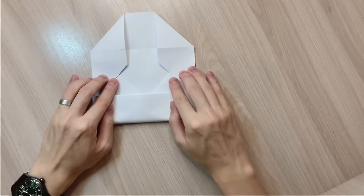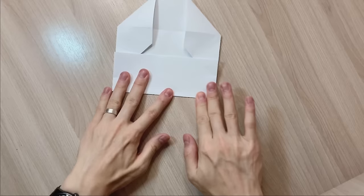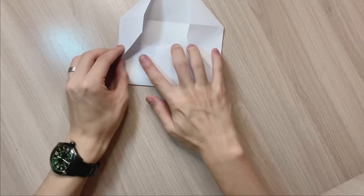So next you're gonna grab the bottom and drag it all the way up to these two points which I'm showing here. Make a crease. And then you're gonna tuck the paper under the flaps here.